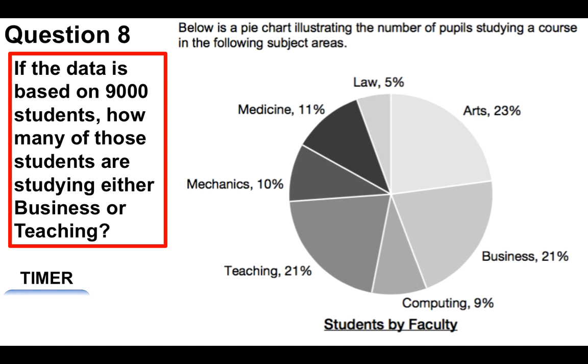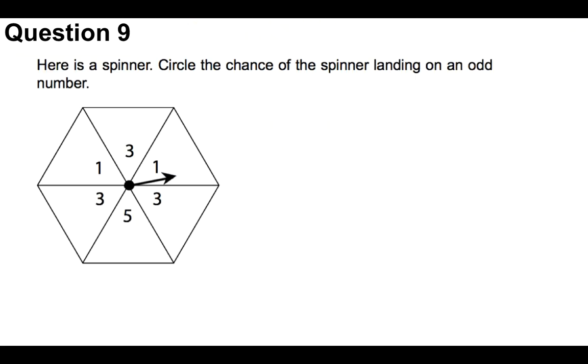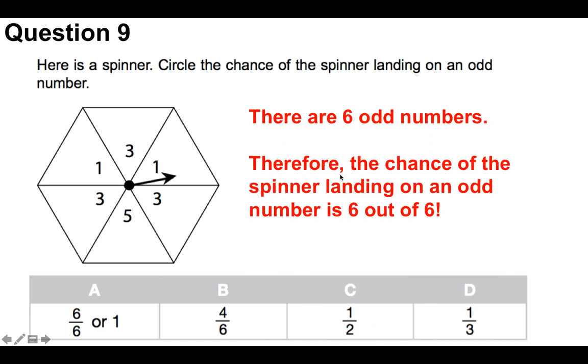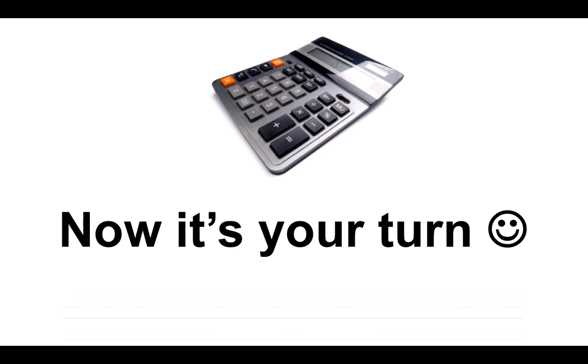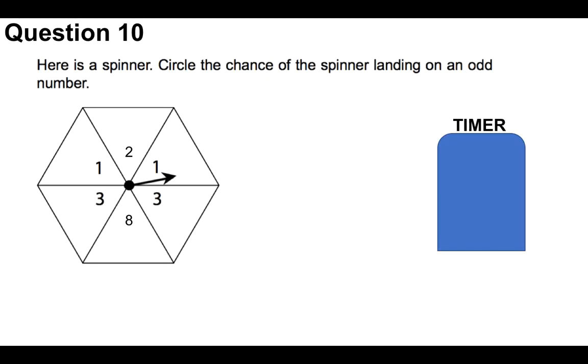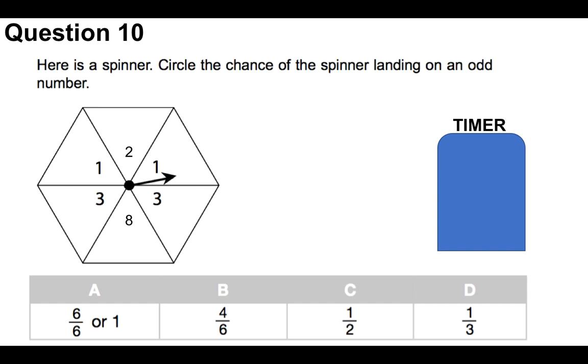Well done if you got that done in time. Question number nine: Here is a spinner. Circle the chance of the spinner landing on an odd number. So you've got option A: 6 out of 6 or 1, B: 4 out of 6, C: 1 half, or D: 1 third. Well, if you look at the numbers, there are six odd numbers. Therefore, the chance of the spinner landing on an odd number is 6 out of 6, and the answer is A. Really simple. Next one. Again, now it's your turn. Please put your answer in the comments section below. Question ten: Here is the spinner. Circle the chance of the spinner landing on an odd number. A: 6 out of 6, B: 4 out of 6, C: 1 half, or D: 1 third. Off you go.